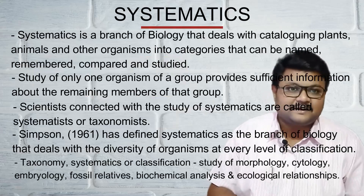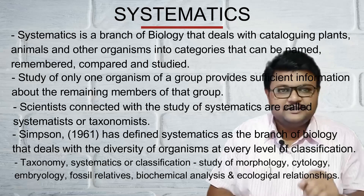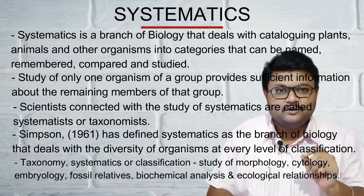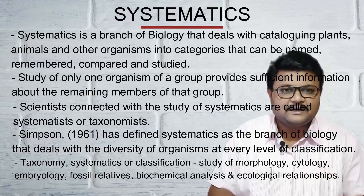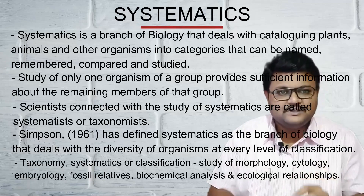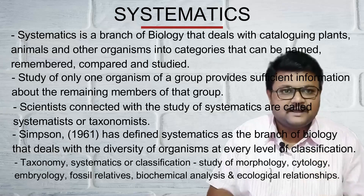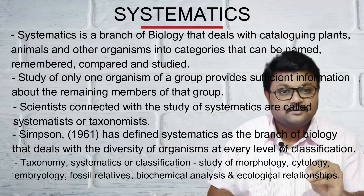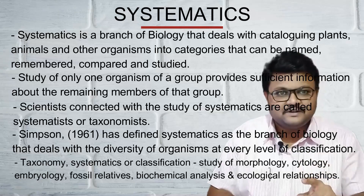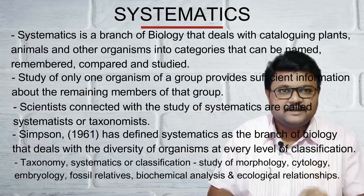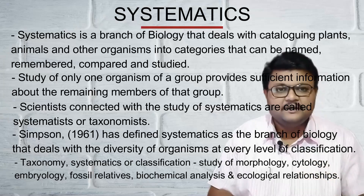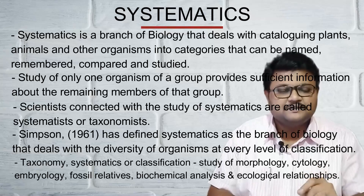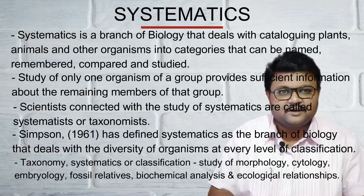So, what is the meaning of systematics here? Systematics is a branch of biology — this is the 3rd branch of biology — and through systematics we will be able to get the catalogs, groups, and nomenclature. Once again, systematics is a branch of biology which deals with the cataloging of different kinds of living organisms.